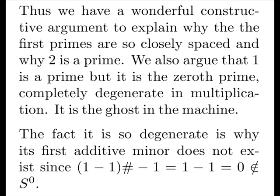Thus we have a wonderful constructive argument to explain why the first primes are so closely spaced, 2 and 3, and why 2 is even a prime. We also argue that 1 is a prime, but it is the 0th prime, completely degenerate in multiplication. It is the ghost in the machine. The fact it is so degenerate is why the first additive minor does not exist. Since we wind up subtracting 1 from 1, we get 0, and it's not a member.